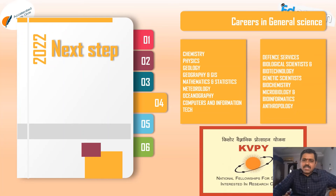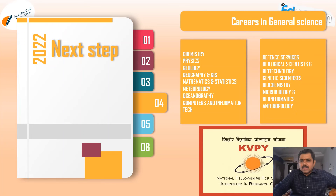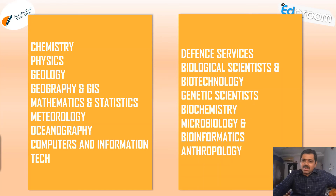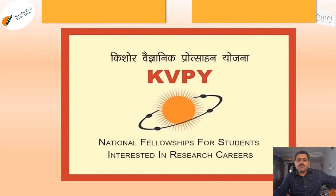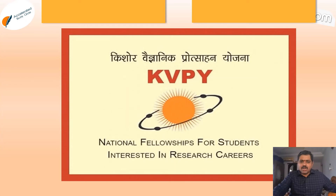Careers in general science — people interested in pure science like chemistry, physics, biology, geographical sciences, mathematical and statistical sciences, meteorology, and oceanography can pursue this. Biological sciences, biotechnology, genetic sciences, biochemistry, microbiology (a very trending course), bioinformatics, and anthropology are also available. The Central Government encourages students to pursue pure science courses. For those interested in research, the KVPY exam — Kishore Vaignanik Protsahan Yojana — is available from class 10 itself. Qualifiers receive scholarships throughout their career in pure science and can continue scholarships if they pursue research.